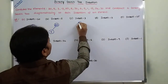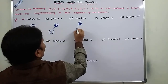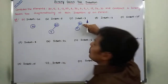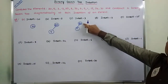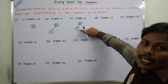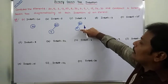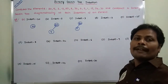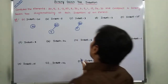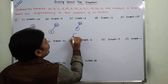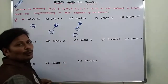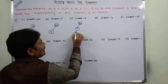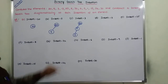Next, we are inserting element 3. Element 3 is compared with root node 20 — 3 is less than 20, so go to the left subtree. In that left subtree, node 5 is there. Next, 3 is compared with 5 — 3 is less than 5, so go to the left subtree. Here the left subtree is empty, so we create a new node and insert that value. Node 3 becomes the left child of 5.